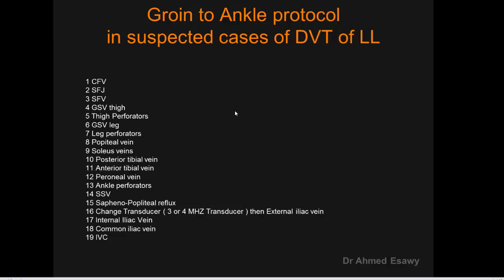The groin-to-ankle protocol is used for suspected cases of DVT in the lower limb, starting from the groin: common femoral vein, saphenofemoral junction, superficial femoral vein, great saphenous vein thigh side, thigh perforators, great saphenous vein leg, leg perforators, popliteal vein, soleus vein, posterior tibial vein, anterior tibial vein, peroneal vein, ankle perforators, short saphenous vein, and saphenopopliteal reflux.